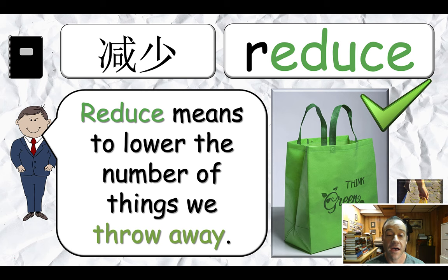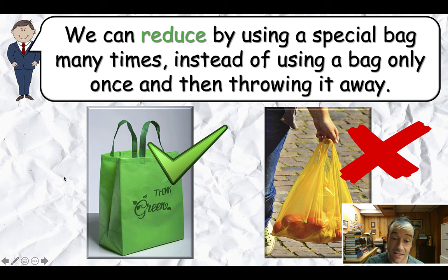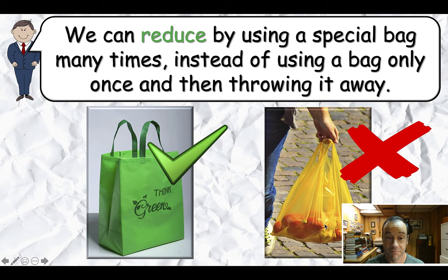The first one is reduce. They can write it down in their notebook. Reduce means to lower the number of things we throw away. They'll understand exactly what this means because they see it in their first language. We can reduce by using a special bag many times instead of using a bag only once and then throwing it away. If they use the reusable bag, they can use it many, many times. If they use the disposable one, it'll end up in a landfill. Go to the store 10 times with the reusable bag — nothing's in the landfill. With the plastic bag — 10 of those bags are in the landfill.